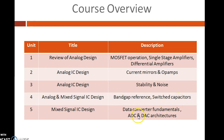The last unit, Unit 5, gives an overview of ADC and DAC fundamentals. ADCs and DACs are the crucial interface blocks which connect the analog and digital world. A few architectures of DACs and ADCs are covered, which include current steering DAC, successive approximation ADC, and oversampling ADCs.